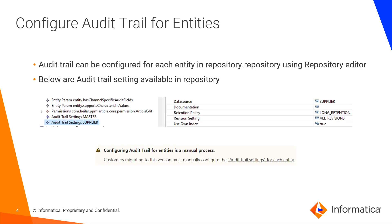To configure the audit trail for entities, first we're going to configure each entity's audit trail using repository settings. For each entity, you will have audit trail settings for the master, which is for the master catalog, and for the supplier, which is for the supplier catalog.